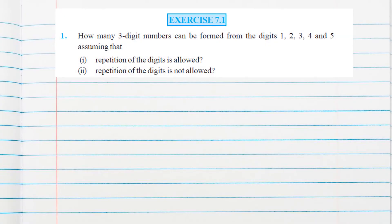The question is: how many three-digit numbers can be formed from the digits 1, 2, 3, 4, and 5, assuming that repetition of the digit is allowed?